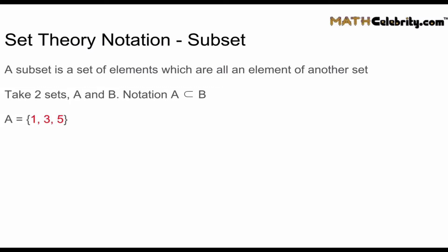So as an example, set A is going to be the elements one, three, five. Set B is going to be the elements one, two, three, four, five, six. Now we want to know, is A a subset of B? Yes, it is. Because all elements in set A exist in set B. So the elements one, three, five are all included in set B. So that means A is a subset of B.